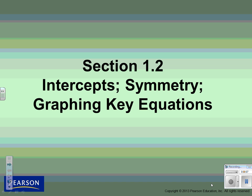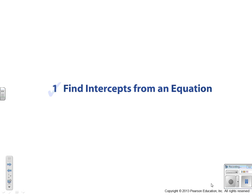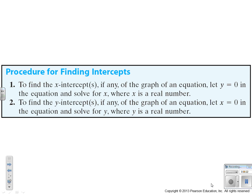This is section 1.2, intercepts, symmetry, and graphing key equations. The first thing we're going to talk about is finding the intercepts from an equation. We touched on it a little bit yesterday, but instead of a graph, we're going to just do the equation.